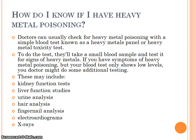Doctors can usually check for heavy metal poisoning with a simple blood test known as a heavy metal panel or heavy metal toxicity test. They will take a small blood sample and test it for signs of heavy metals. If you have symptoms of heavy metal poisoning but blood tests show only low levels, additional testing may include kidney function tests, liver function studies, urine analysis, hair analysis, fingernail analysis, electrocardiograms, and X-rays.